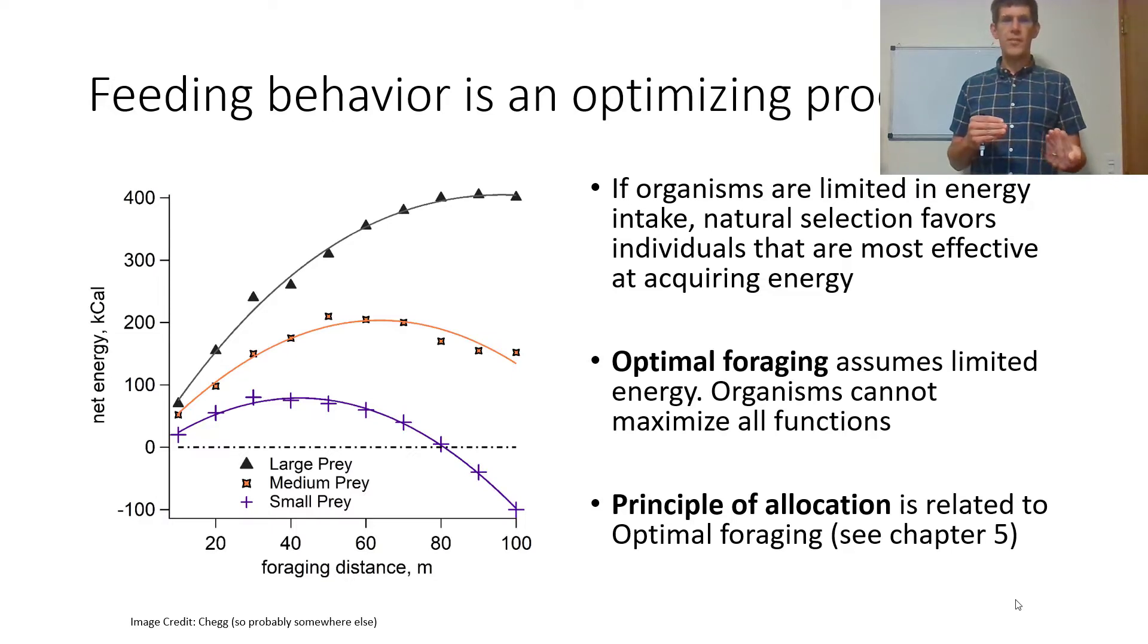You may notice that the distance worth foraging for a larger prey is a larger distance than the maximum distance worth going for a smaller prey. At a certain point, if you had to climb to the top of Mount Eleanor to eat a squirrel, that's not enough energy, and you end up losing more energy than you gain. That's related to the principle of allocation because energy spent foraging is energy that cannot be used in growth.